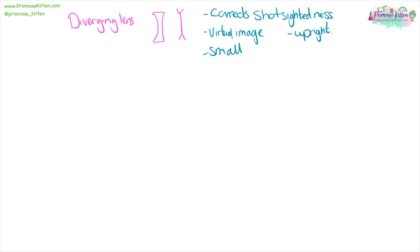Your diverging lens is going to be curved in like this and this is the shorthand. It's going to correct short sightedness. It's going to give us a virtual image which is upright but smaller.